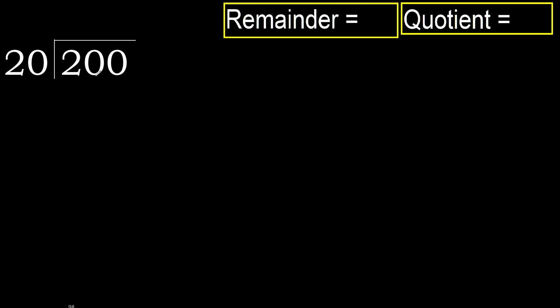200 divided by 20. 2 is less, therefore next. 20 is not less, therefore we work with 20.